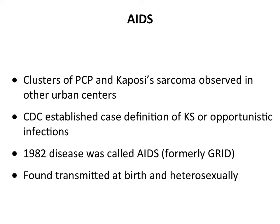This was the beginning of the AIDS pandemic. There were additional clusters of Pneumocystis carinii pneumonia (PCP) and Kaposi's sarcoma, a very rare skin cancer, found in other urban centers. The CDC established a case definition: either Kaposi's sarcoma or some opportunistic infection like PCP, Candida, or CMV that you don't normally see in healthy people. The disease was originally called GRID - gay-related immunodeficiency - wrongly thought to be exclusively gay-transmitted, until it was renamed AIDS and found to be transmitted at birth and heterosexually as well.